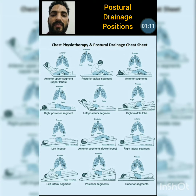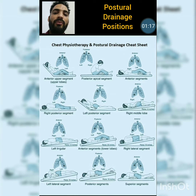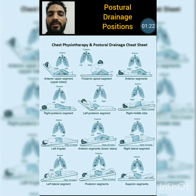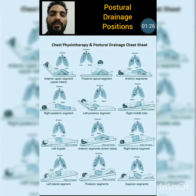The second position is called the posterior apical segment position, which involves approximately 90 to 100 degrees of trunk flexion in a sitting position with a pillow underneath the patient's knees. The therapist will provide percussion or tapping over the upper trapezius region.